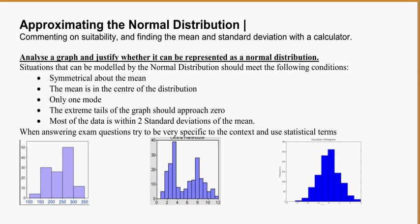So one of the first things they can ask us to do is analyze a graph and justify whether it can be represented as a normal distribution. Situations that can be modeled by the normal distribution should meet these following conditions. Your graph basically has to meet all of these conditions.